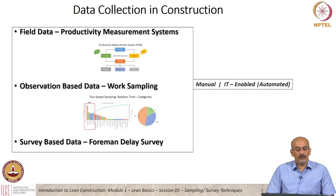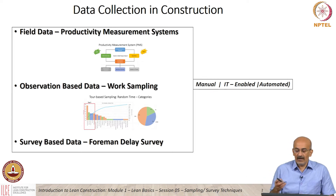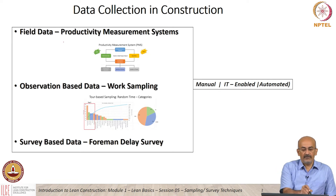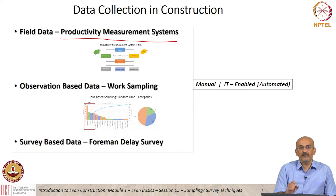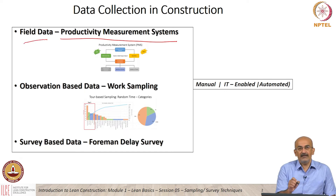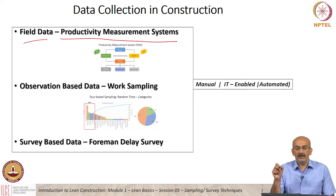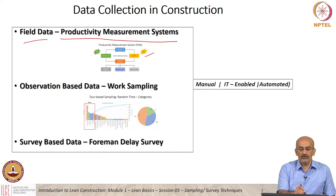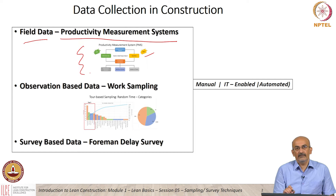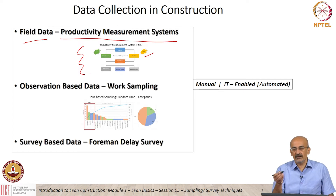Broadly, when we look at data collection and construction, we have several different methods. For example, when we look at a productivity measurement system, which we covered earlier, it is actually field data — we get the actual quantities completed, the output, the input used was the work hours. All this is field data going into our system. This is one method in which we get data from a construction site.